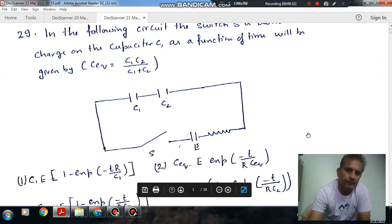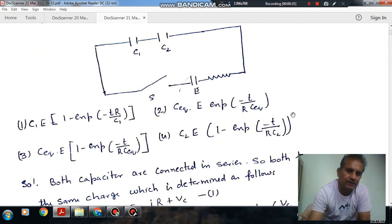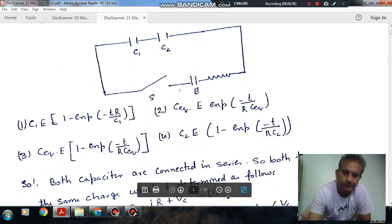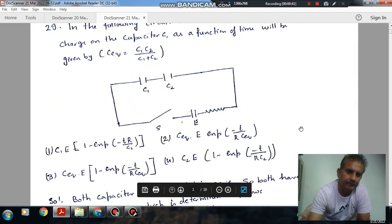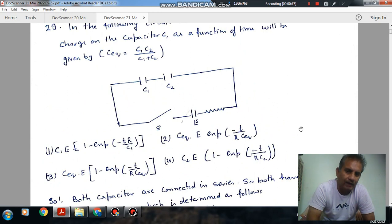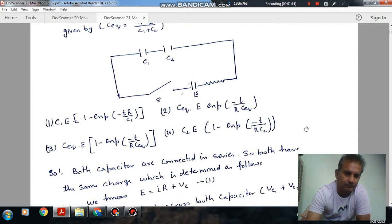The options are: (1) C1 E bracket 1 minus exponential minus T by R C2. (2) C equivalent E exponential bracket minus T by R C equivalent. (3) C equivalent E bracket 1 minus exponential minus T by R C equivalent. (4) C2 E bracket 1 minus exponential minus T by R C equivalent.